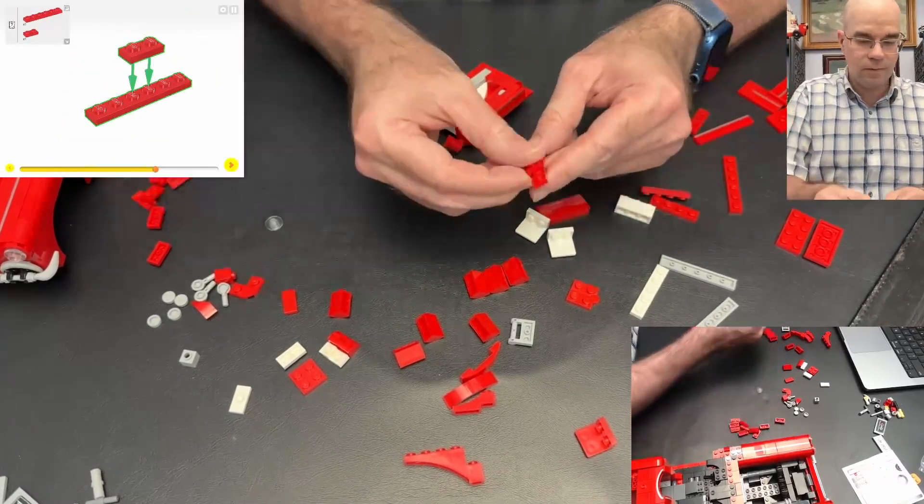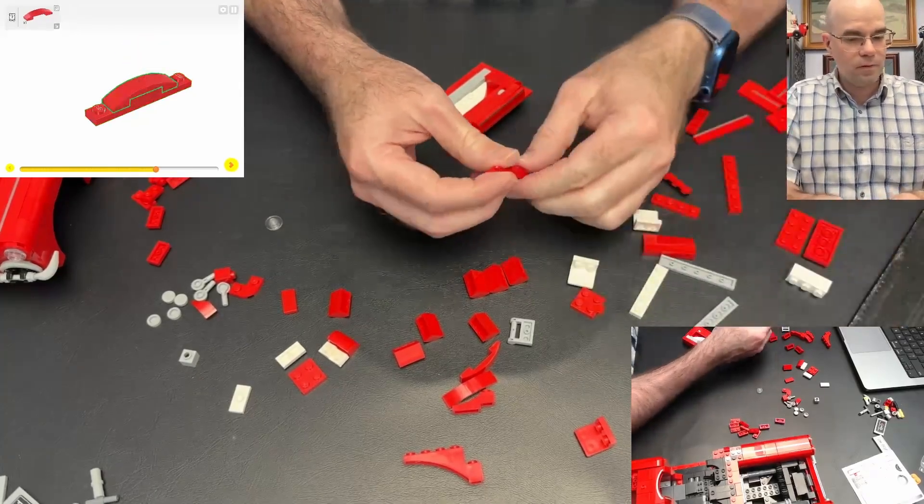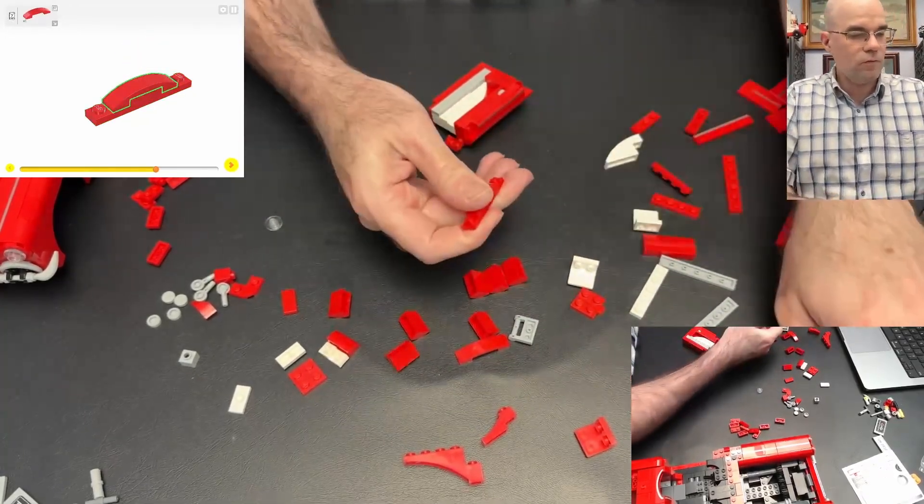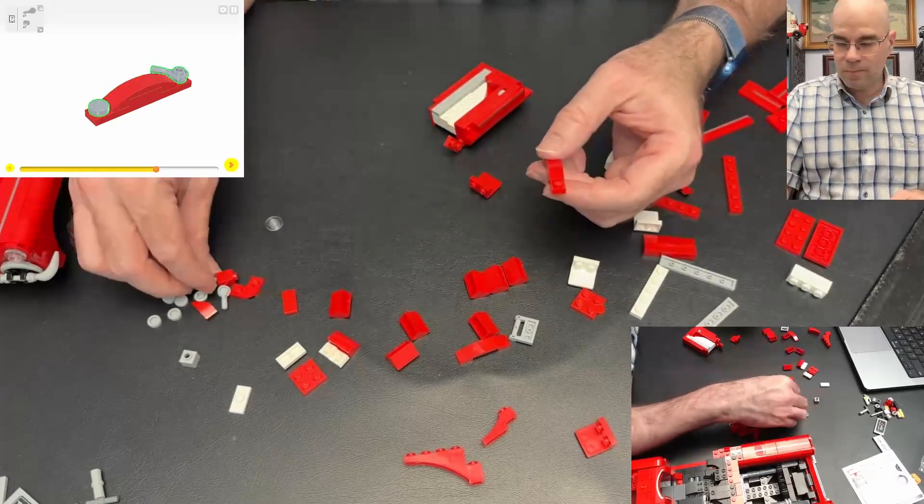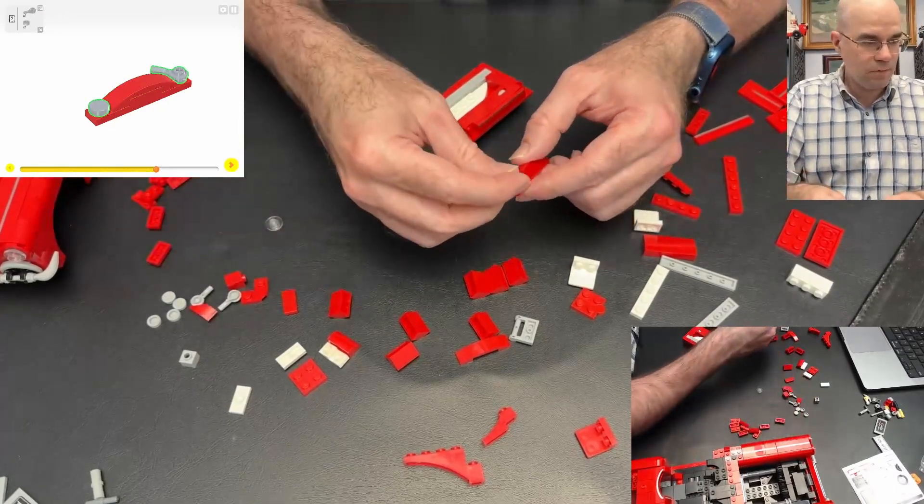Okay, put that there. This curved slope. We got the door handle and the window.